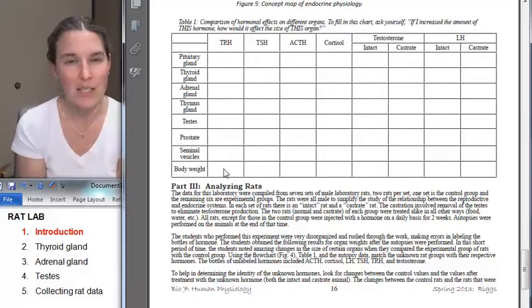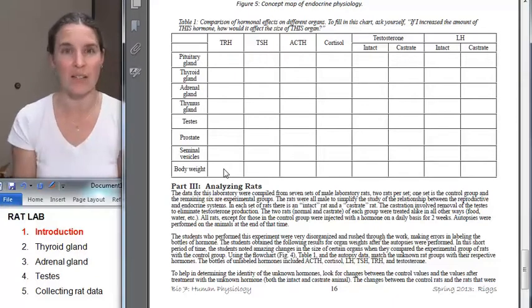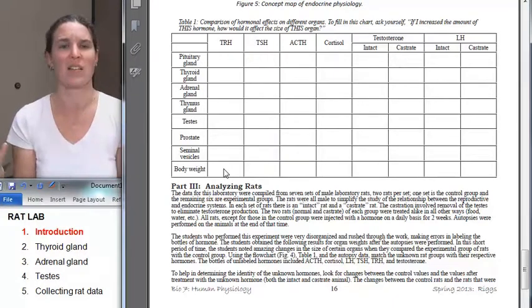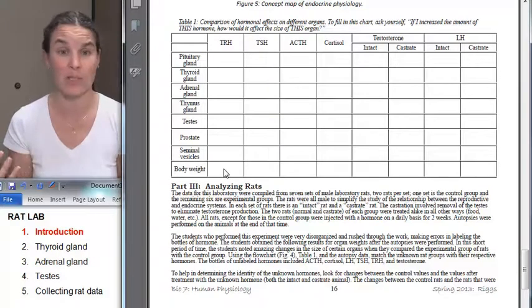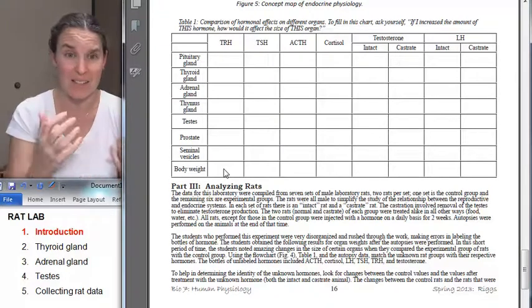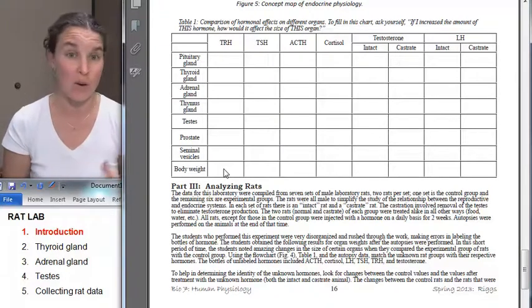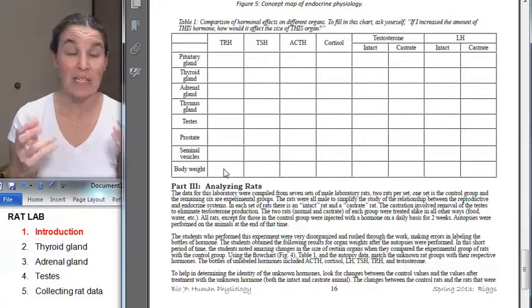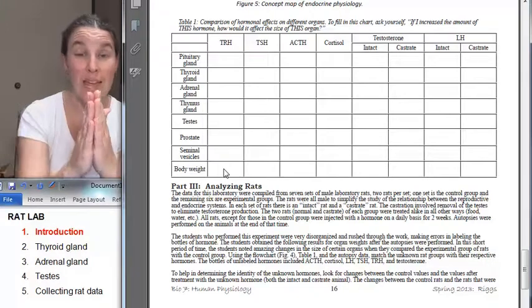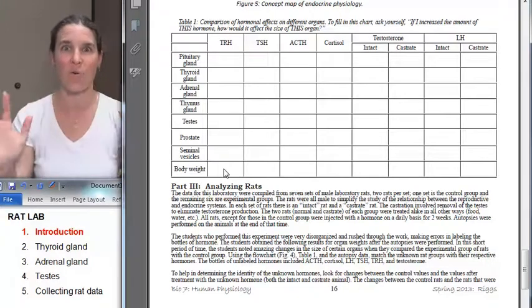Some of these, this hormone you might decide doesn't have an effect. Is it going to have an effect on the thymus? Like how would thyroid releasing hormone affect the thymus? And then you're just going to put a little X, like it doesn't do anything for that. Or maybe you'll even just leave it blank. Either way is totally fine, but at the end you're going to get this whole thing filled out.